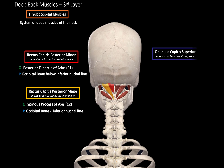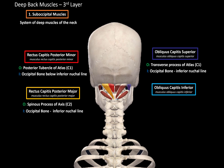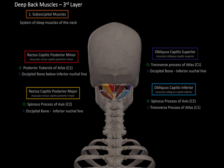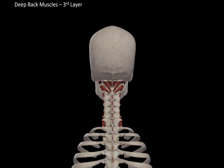Then we have the oblique muscles of the head. The obliquus capitis superior originates at the transverse process of the atlas and inserts at the inferior nuchal line of the occipital bone. And the obliquus capitis inferior originates at the spinous process of the axis and inserts at the transverse process of the atlas. So that was all the suboccipital muscles.